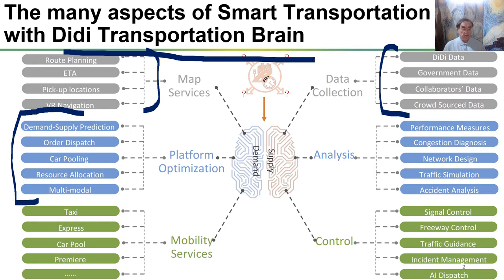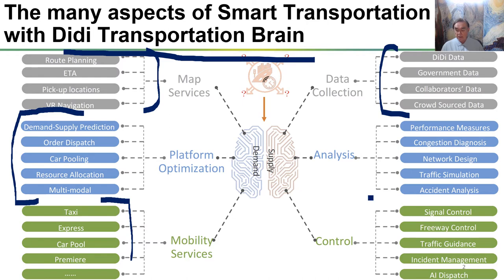All the ride hailing companies tend to have a pooling option where multiple customers share the same car. Then we have to have various forms of mobility: taxis, expresses, carpools, premium, self-driving, walking, and so on. And then we have to manage the whole thing — signals, freeways, traffic guidance, crash management, AI dispatch. And then we have to analyze these things as well. So this is a pretty sophisticated system.